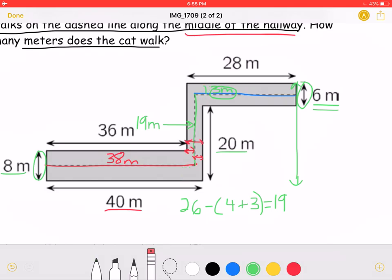And I'm just erasing once in a while so the drawing doesn't get too cluttered. So finally, we have the length of the blue portion. We have already established that this part right here is equal to 2 meters.